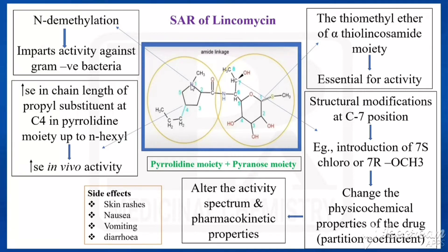In the case of this pyrrolidine, it is having a methyl group attached with the nitrogen. So, if the methyl is removed — that is N-demethylation — that imparts activity against gram-negative bacteria. So, if you remove the methyl group from the nitrogen, it gives activity against gram-negative bacteria.